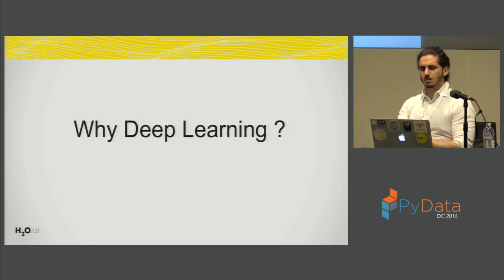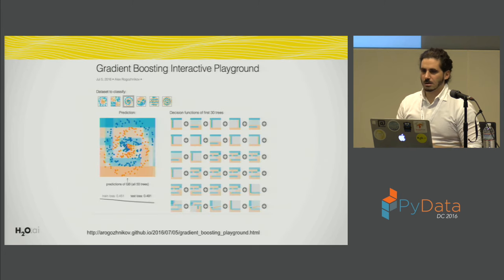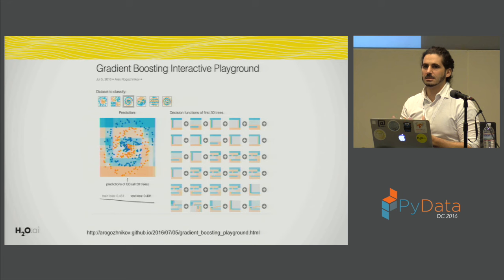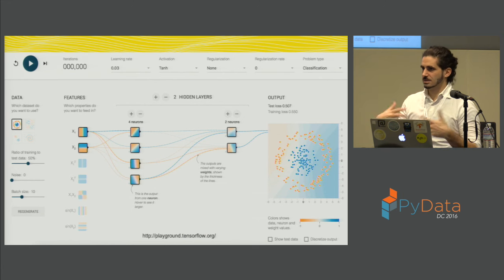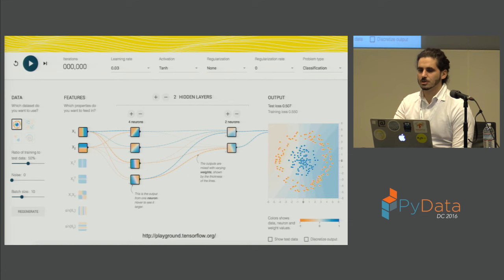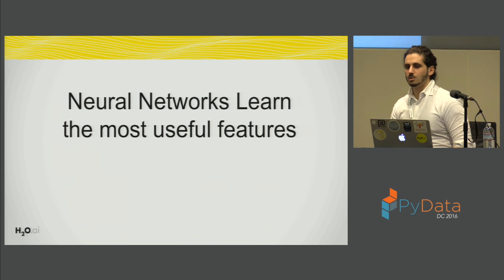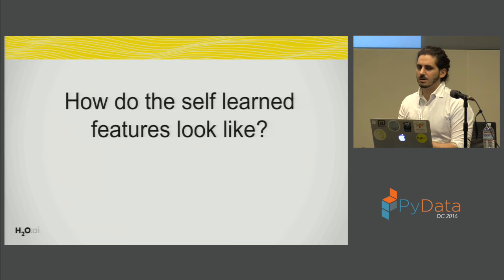Another reason deep learning is exciting is that we have to do less feature engineering. With gradient boosting, you really need to manipulate the data in the right way to fit it properly. But with neural networks, you just give data — it needs to be normalized so the numeric part is stable, but you don't need to do extensive feature manipulation. That's because neural networks are able to learn the most useful features themselves. So the question rises: what do these self-learned features look like?